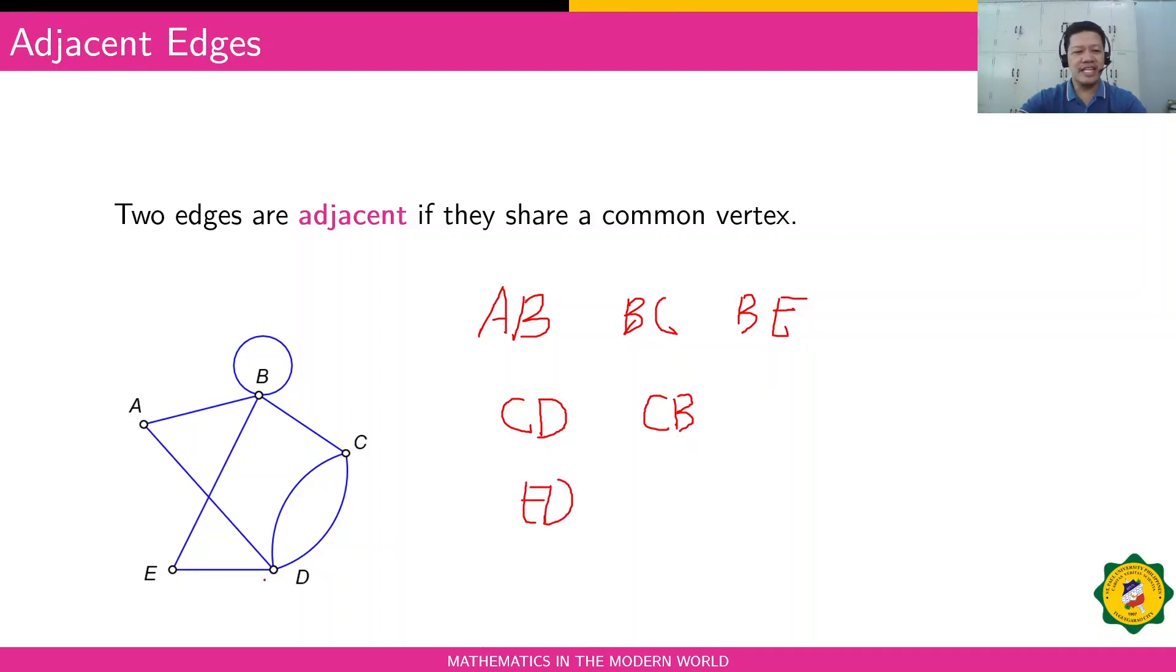If we have the edge ED, you have it here, that is adjacent to EB. Is there any other edge adjacent to ED aside from EB? There's none, because there's only two lines or edges connected to vertex E.